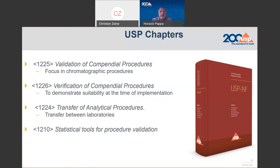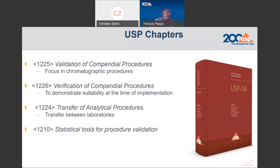A mix of activities associated with verification or transfer can be done in any case. The latest member of the family is chapter 1210, Statistical Tools for Procedure Validation. This is a chapter that has the intention to provide some statistical guidance on how to demonstrate more important performance characteristics of the method, namely accuracy, precision, and limit of quantitation.